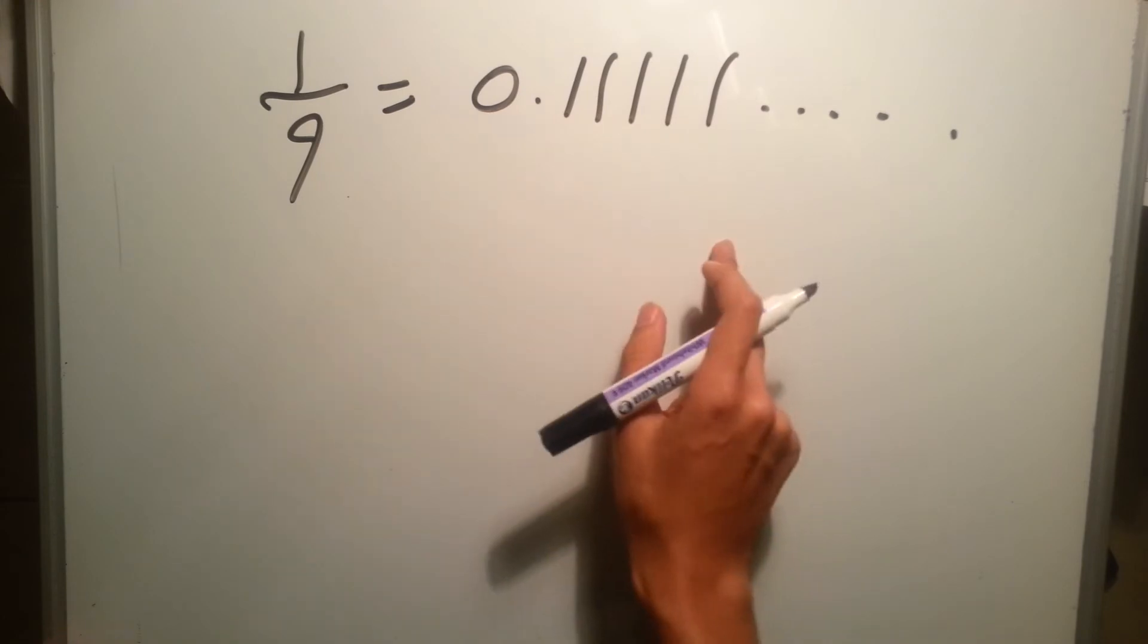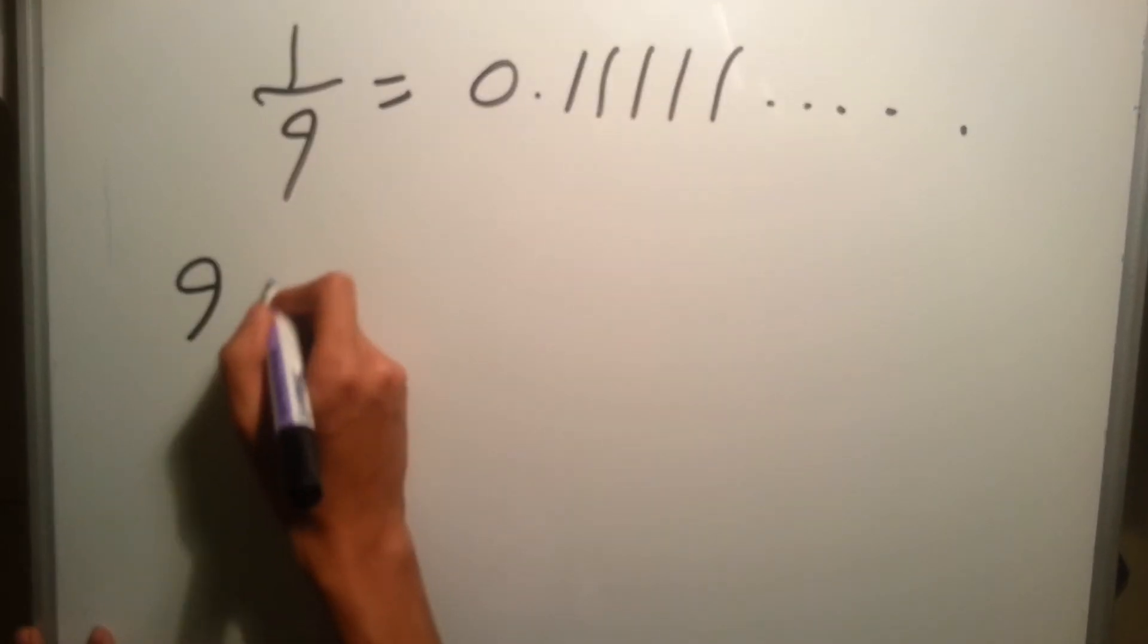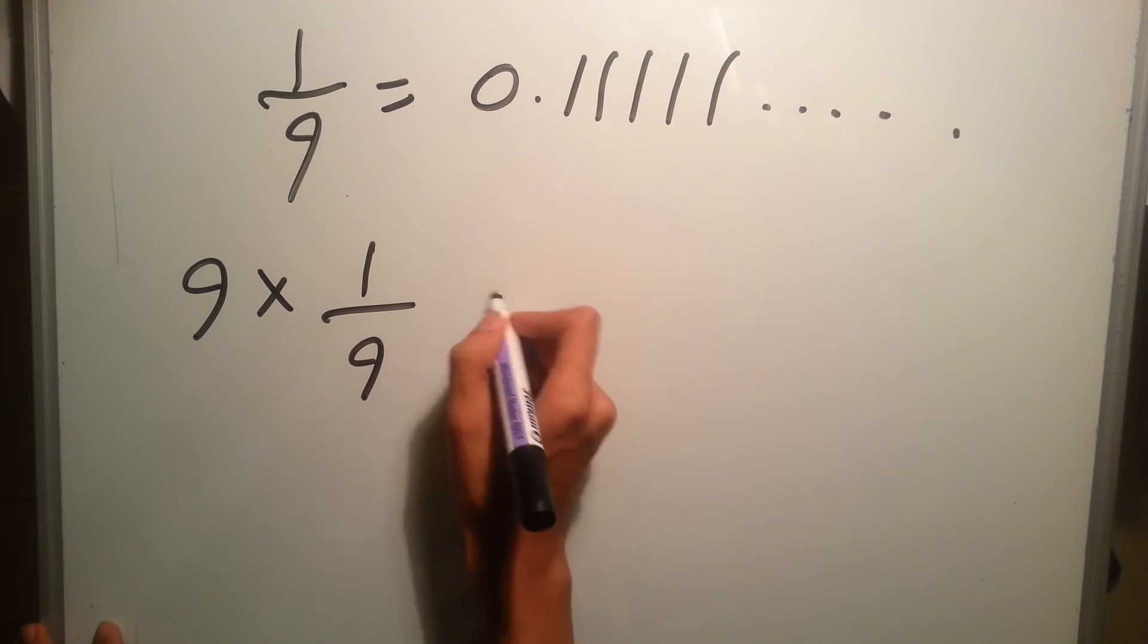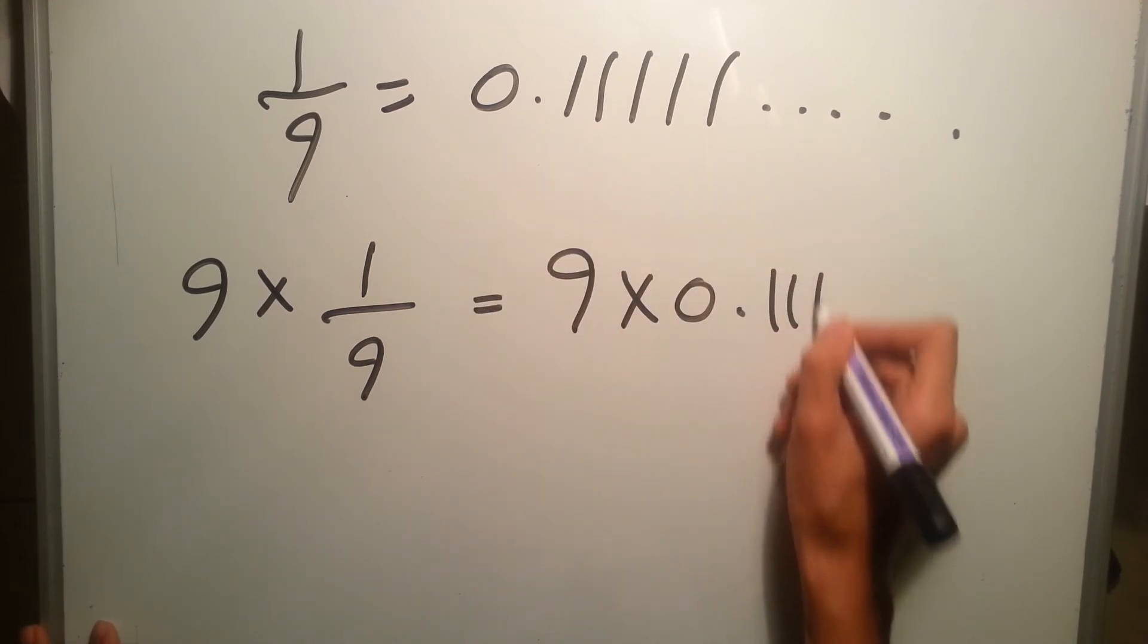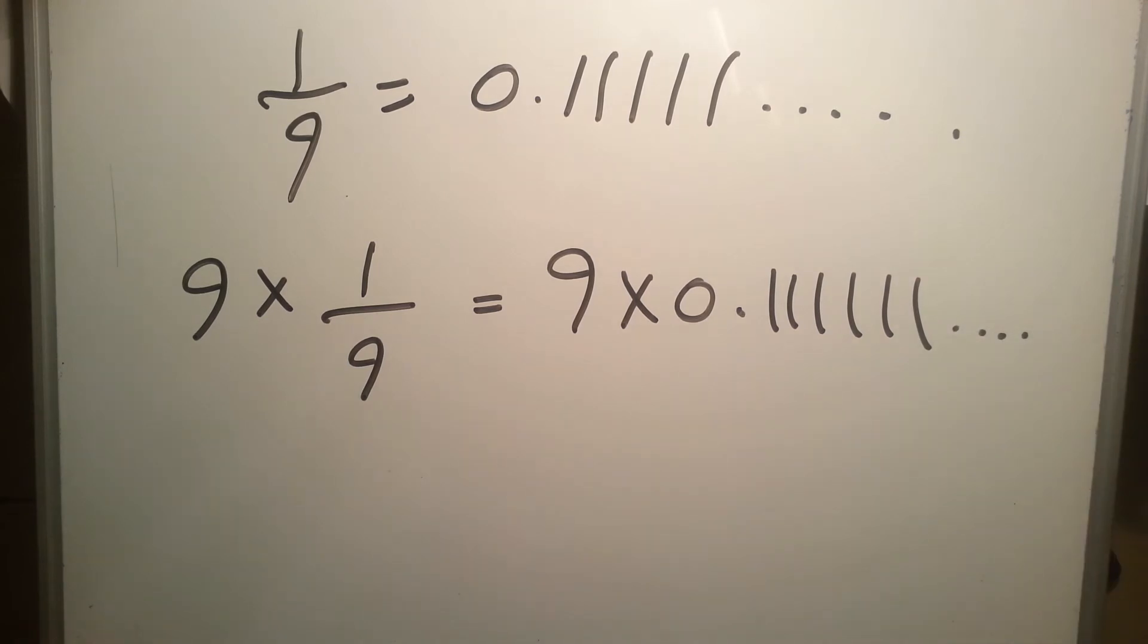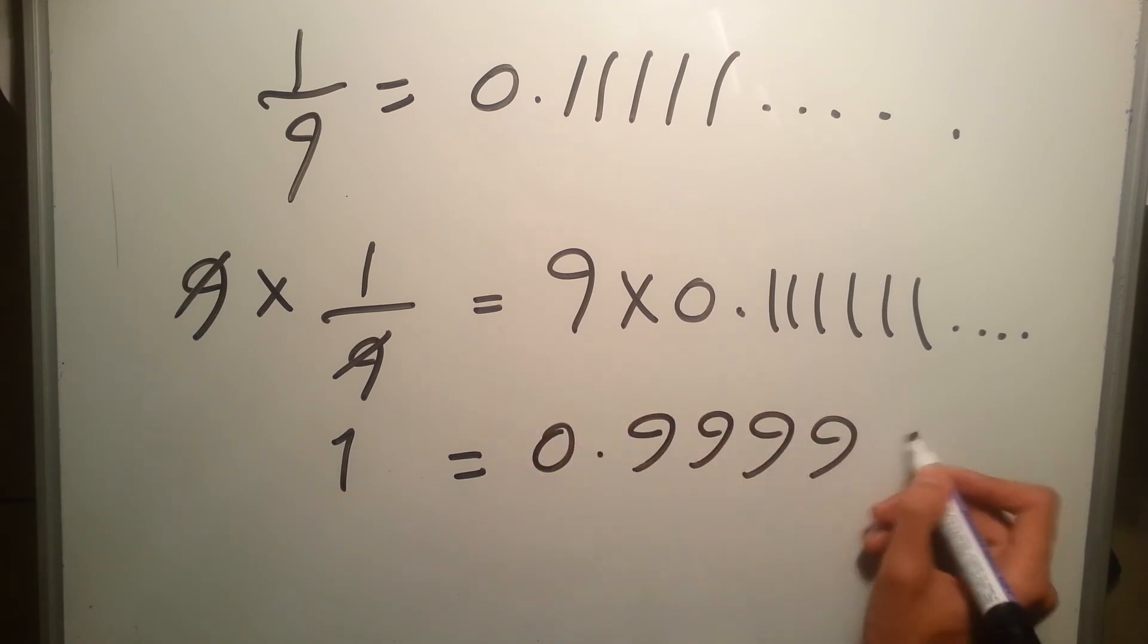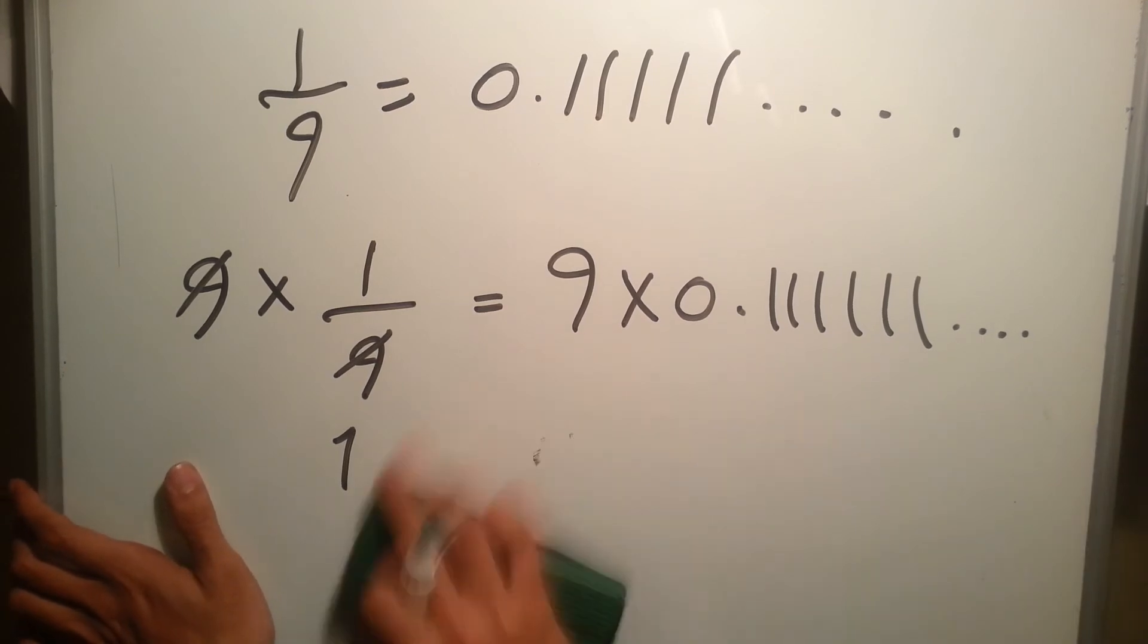However, if you multiply both sides by 9, so 9 times 1 over 9 equals 9 times 0.111111 up to infinity. But this side would equal 1, you'll cancel 9 with 9, you'll end up having 1. However, this side will equal 0.9999999 up to infinity, which means that 1 equals 0.99 periodic.